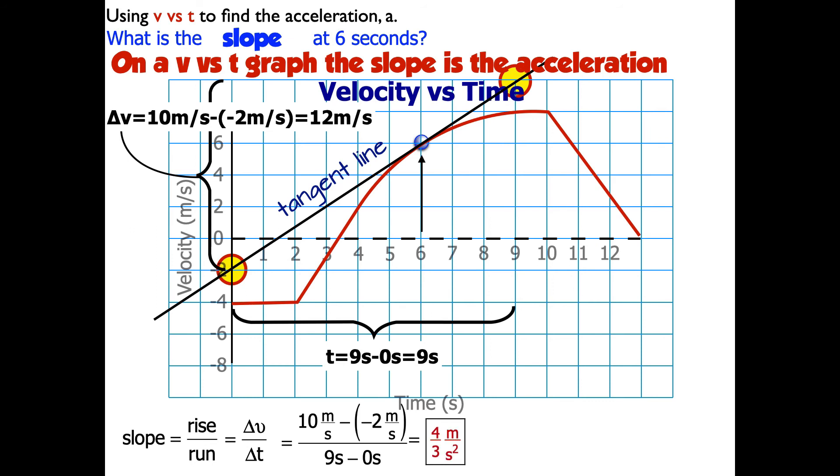I get the units because I take the units of the rise, which are meters per second divided by seconds. That's the same as meters per second times one over seconds. So that's meters per second squared. So the answer is four thirds meters per second squared.